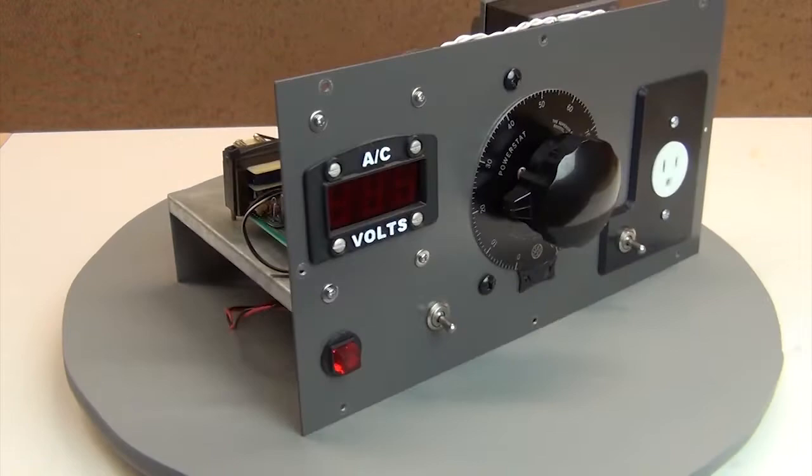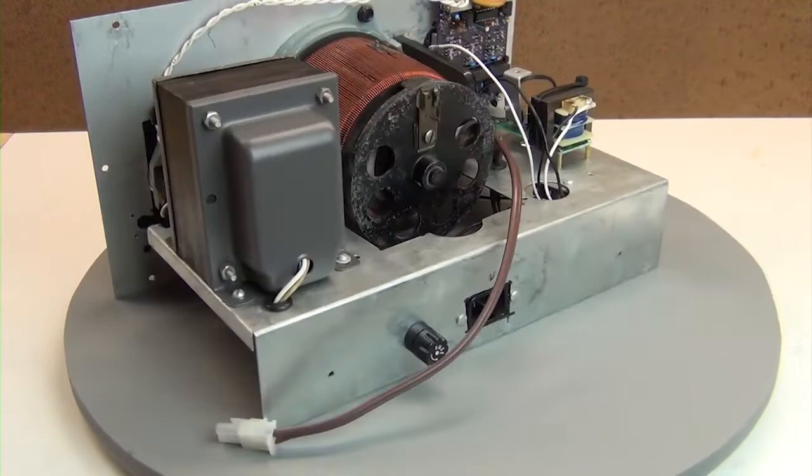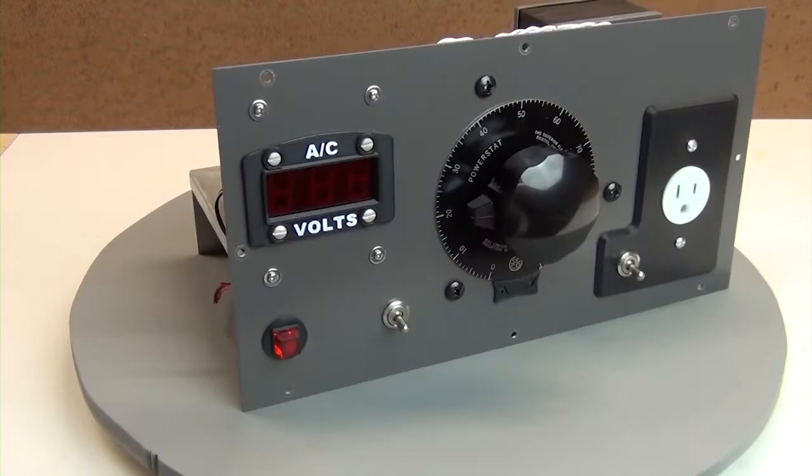If I really need to know amperage I can always improvise a connection to one of my DMMs and get a quantitative reading. Otherwise the qualitative glow of the light bulb is all I need to know.